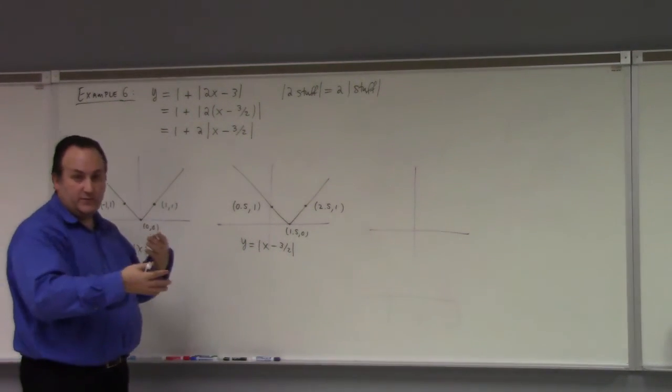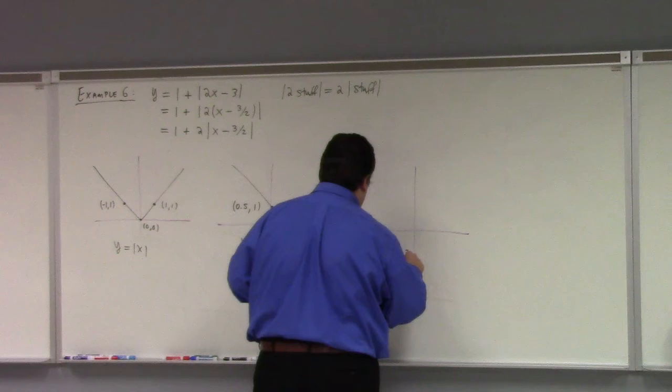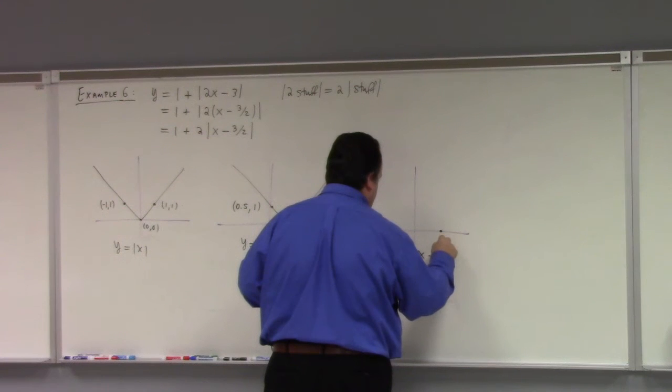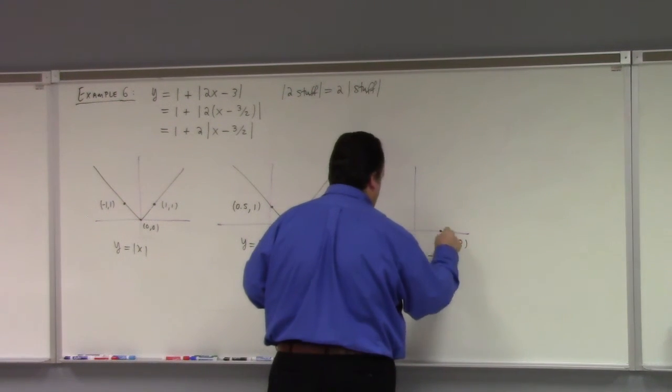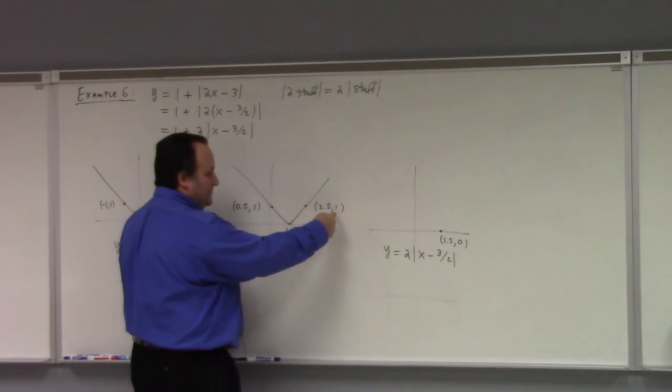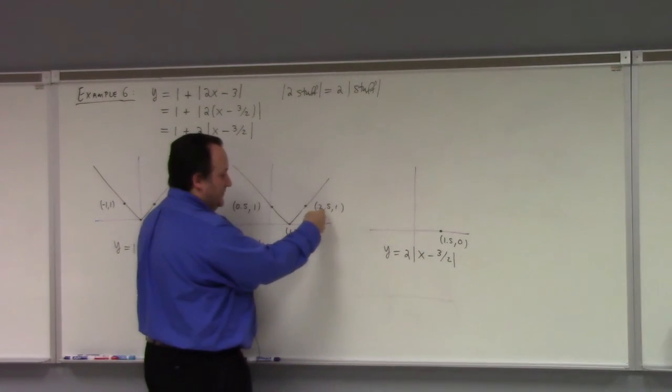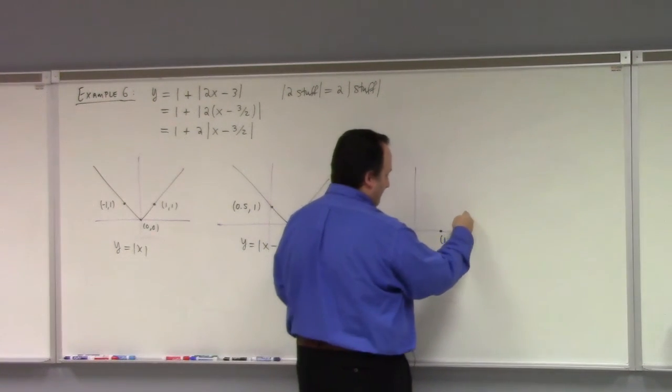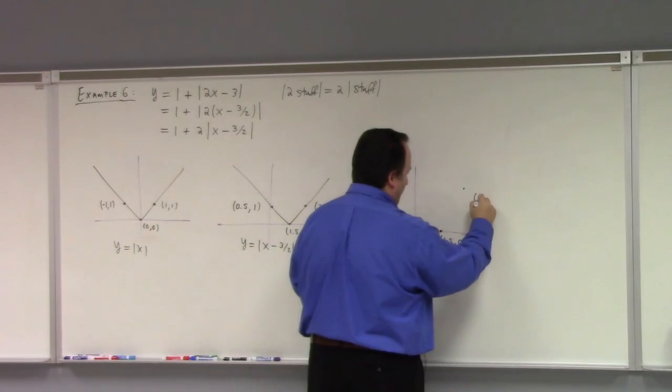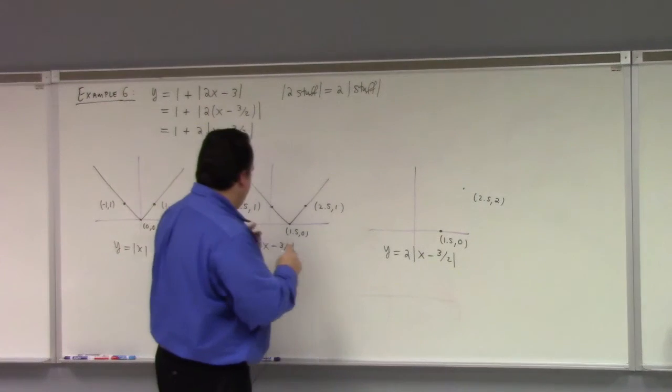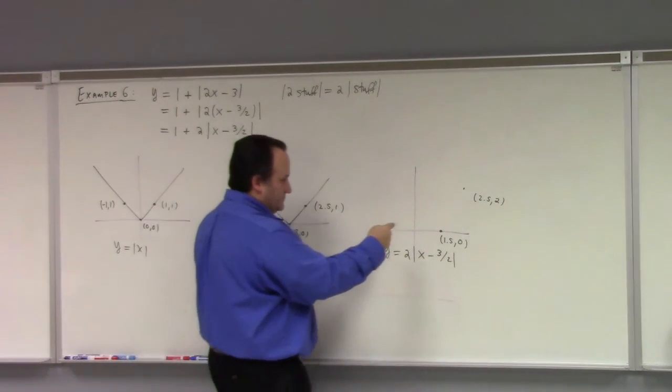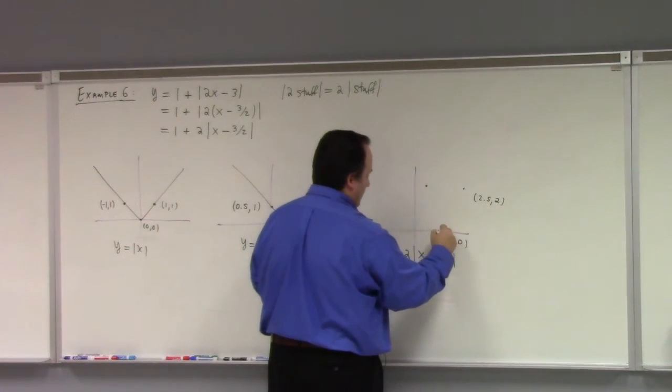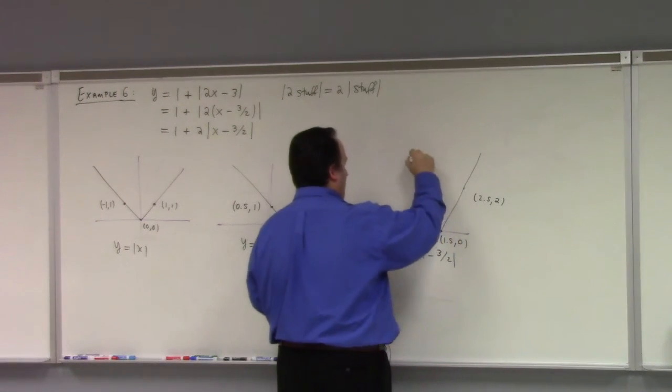So this is the thing we haven't done yet today in any of these examples. So how do you stretch? Basically, we multiply the y by 2. So (2.5, 1) shifts to (2.5, 2). So it's like here. And (0.5, 1) shifts to (0.5, 2). So it's like here-ish. So something like that.